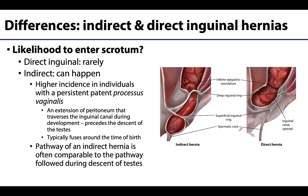Inguinal hernias are more common in individuals with spermatic cords and testes, and herniation can extend past the inguinal canal all the way to the scrotum. This is rare with direct inguinal hernias but is possible with indirect inguinal hernias, particularly in individuals with a patent processus vaginalis.